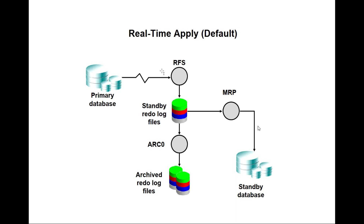The RFS process writes the redo data to either archive redo log files or optionally to the standby redo log files. When we use real-time apply, it uses standby redo log files, allowing Data Guard to recover redo data directly from them as they are filled by the RFS process. This is handled by the MRP process and is the default behavior from 12c onwards.